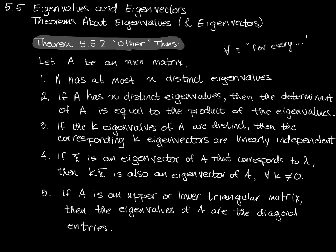Our last theorem is that if A is an upper or lower triangular matrix, then the eigenvalues of A are just the diagonal entries. That's pretty powerful. For example, consider a three by three upper triangular matrix — everything below the diagonal is zero but not everything above is zero. This is our matrix A, which is an n by n matrix where n is three.